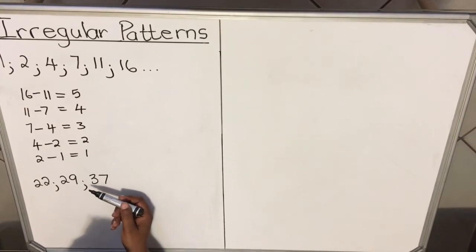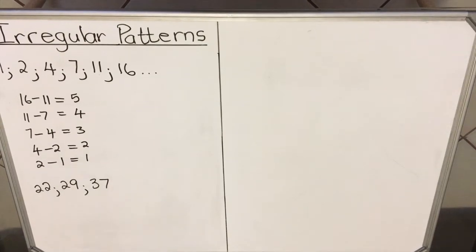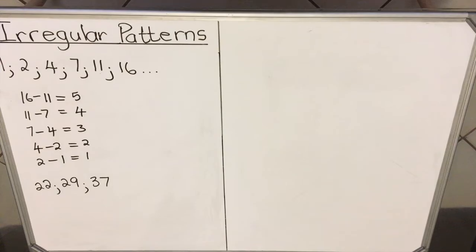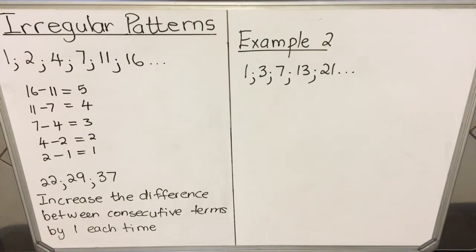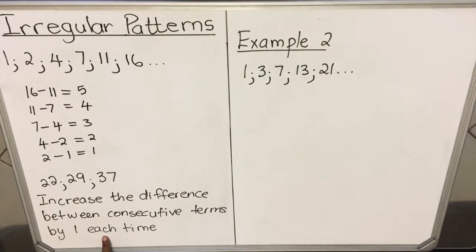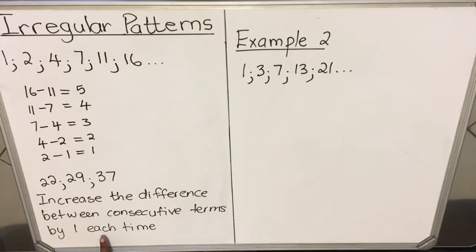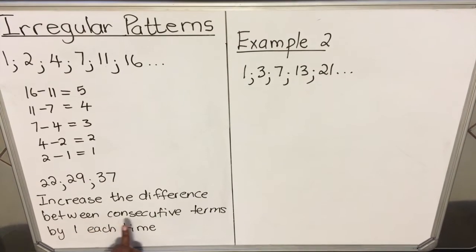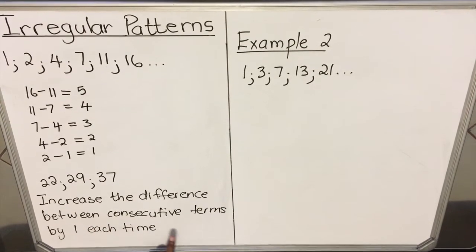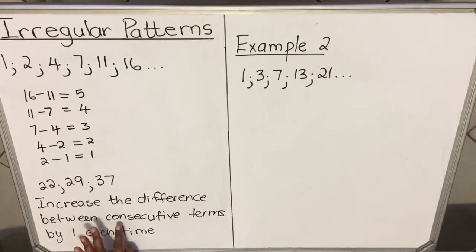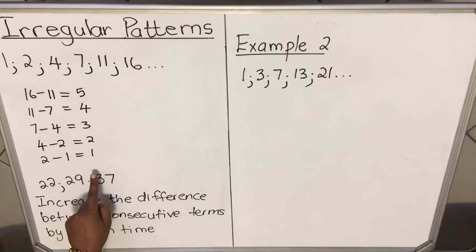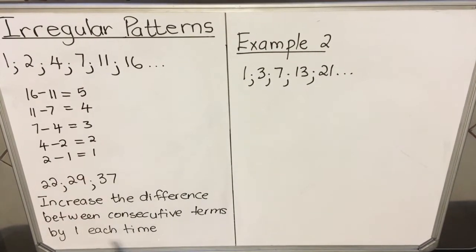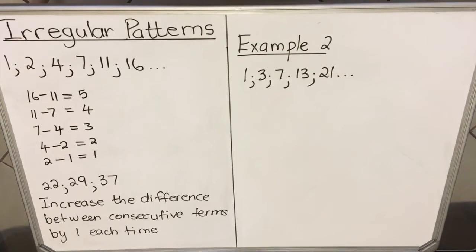They add 1 to what they've added last time. That's the pattern. Let's look at another example. Usually in a question paper they will say write the pattern in your own words. So what did we do here? We increase the difference between consecutive terms by one each time. Remember that thing that you subtracted, we increase it by one every time. It was one, then two, then three. And remember that to get the next term you add the difference.